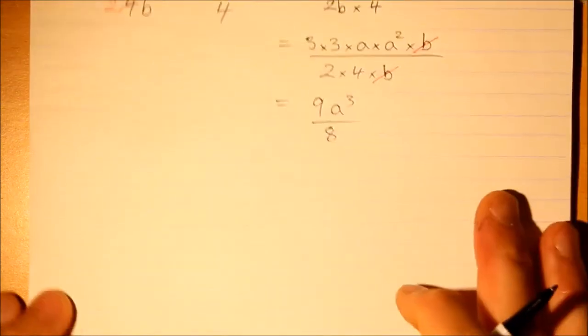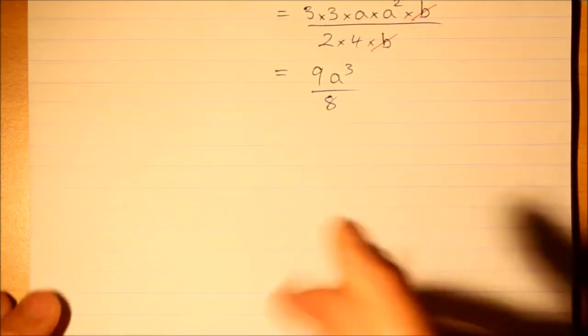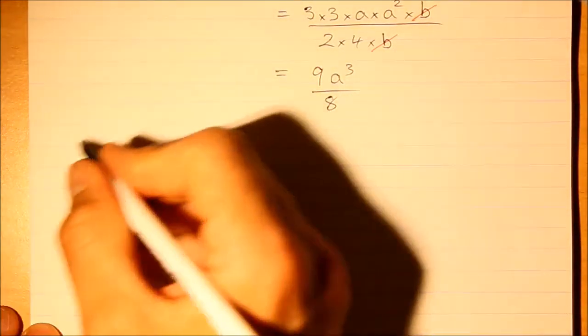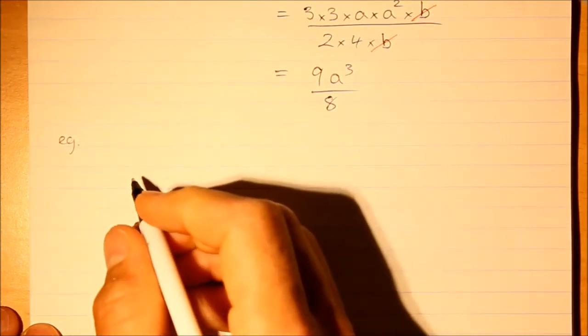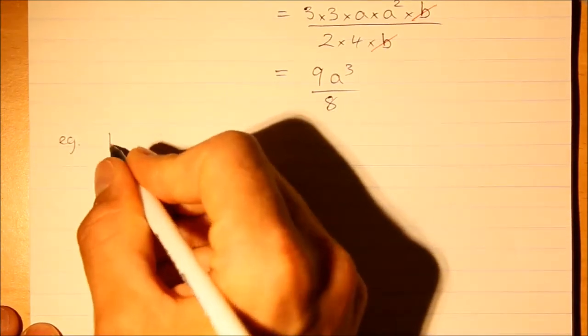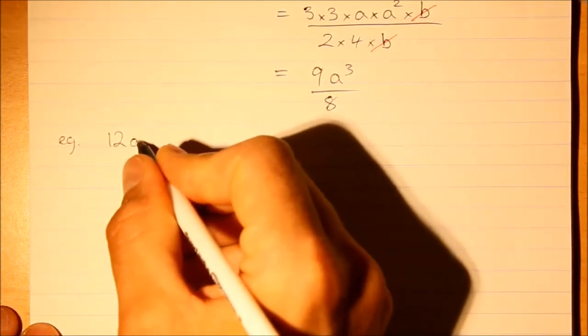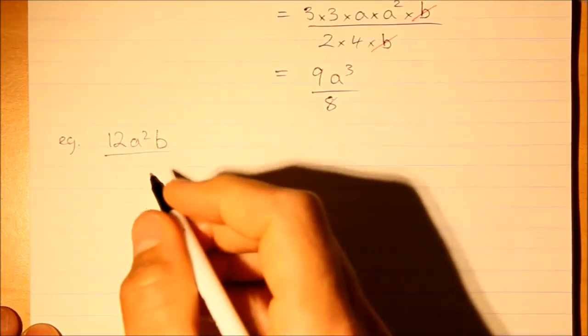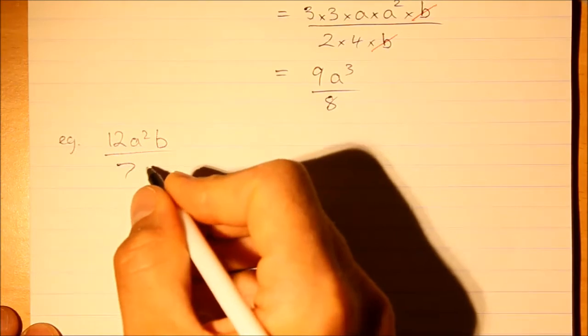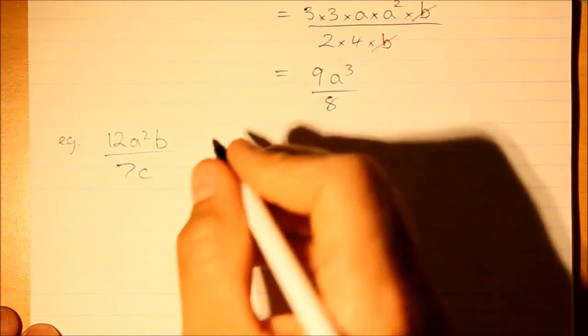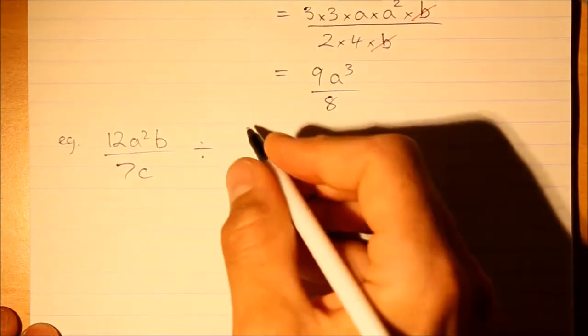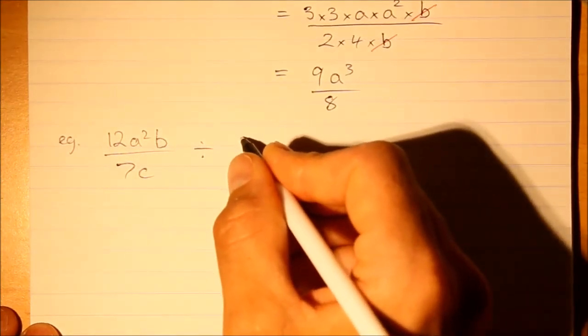So we are left with 9a cubed over 8. Now that's multiplication. Let's have a look at division. Division is really just a reciprocal operation and multiplication, so it's a very similar process.